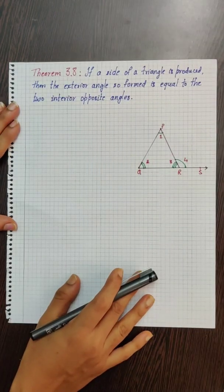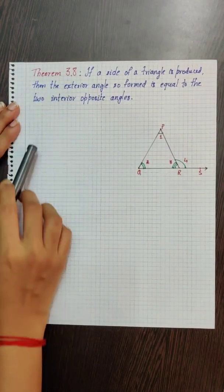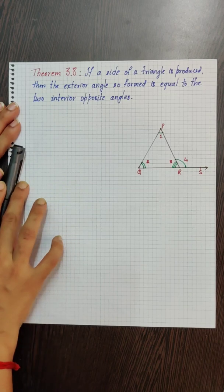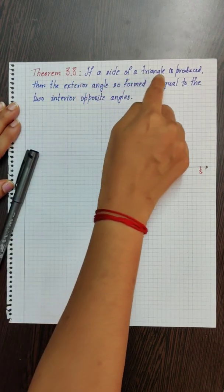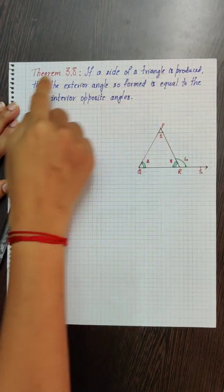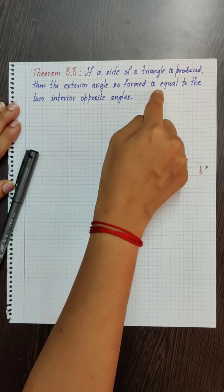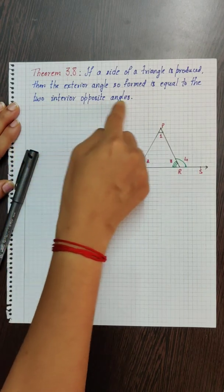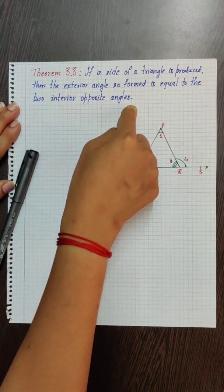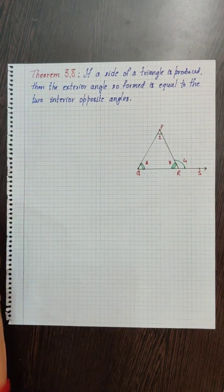Let us look at Theorem 3.8 now. It states that if a side of a triangle is produced, then the exterior angle so formed is equal to the two interior opposite angles. Let us look at the proof now.